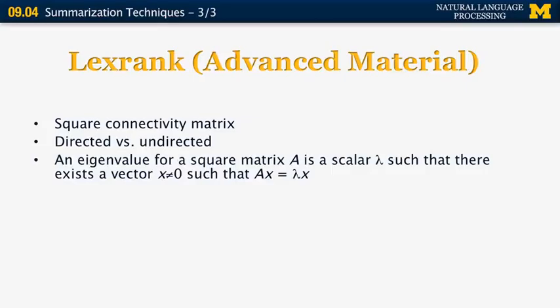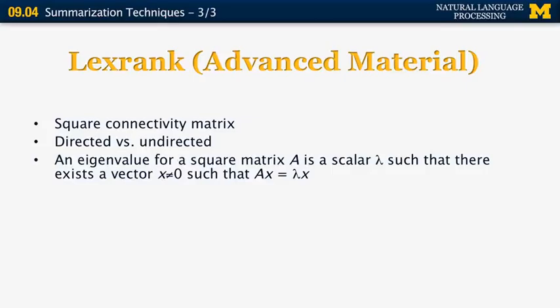It's based on a square connectivity matrix where each node corresponds to a sentence. It can be either directed or undirected. Now an eigenvalue for a square matrix A is a scalar lambda such that there exists a vector x which is not a null vector, such that the product Ax of the matrix with the vector is equal to the product of the scalar lambda with the vector. So that's some sort of implicit direction of the matrix.